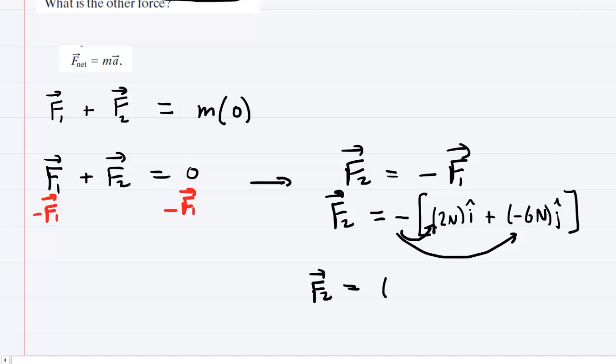We can see now it's going to equal negative 2 newtons i-hat, and then the negative 6 newtons will be negated to become plus 6 newtons j-hat. So this would be the correct answer to the question.